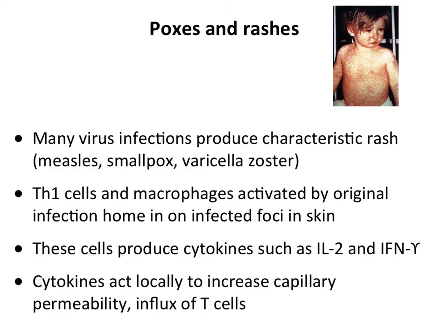The poxes and rashes caused by many viruses — measles, smallpox, varicella zoster — are also immune-mediated. In measles, the virus enters the respiratory tract, gets into blood, disseminates, and reaches the skin. But the virus alone doesn't cause the rash. Th1 cells and macrophages produce cytokines that increase capillary permeability, bring T cells into the infected area of skin, and eventually produce the rash as an immunopathological consequence.